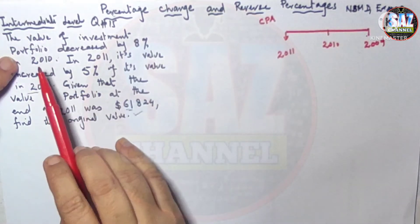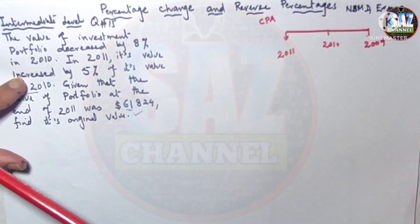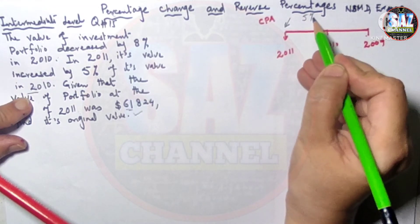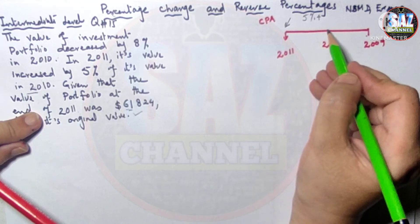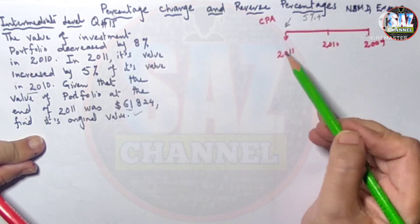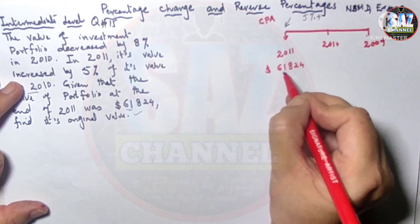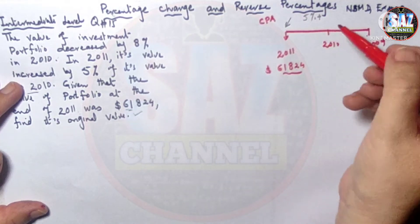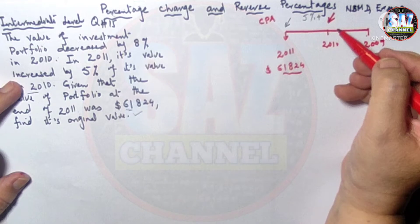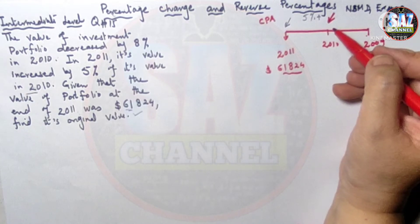The value of the investment portfolio decreased by 8% in 2010. In 2011 its value increased by 5% of its value in 2010. At the end of 2011, the value is $61,824. This value is a 5% increase of the value in 2010 — that is the important point to understand.